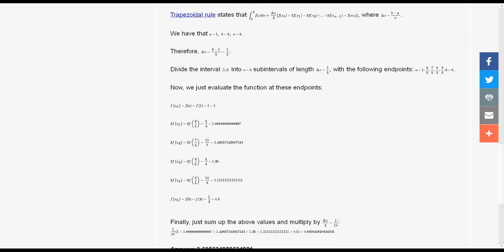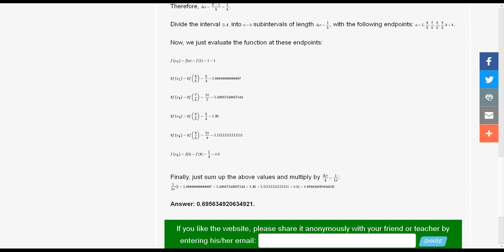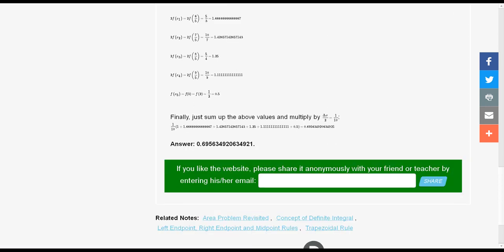We have to do one times f of x zero, which was one, two times f of x one, which was, we'll see it's going to be five over three, or it gives the decimal approximation. We have to do two of f of x two, two of f of x three, two of f of x four, and then one times f of x five and has all those calculations. It adds those together at the very end, it spits out the final answer.